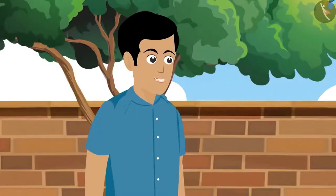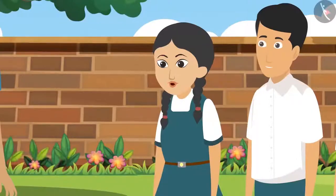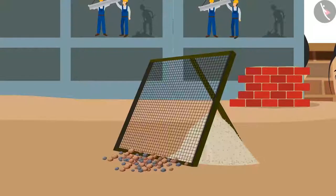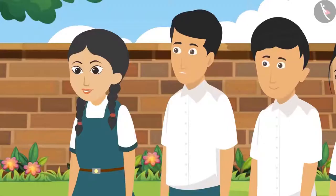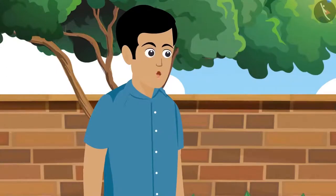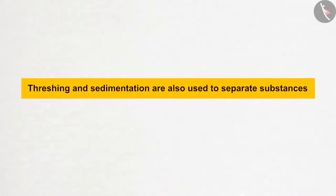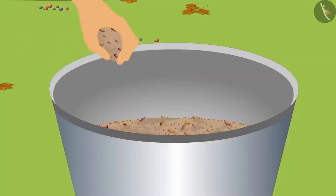Can anyone tell me where else sieving is seen? We separate impurities from flour by sieving before making chapati. I have also seen a large sieve at the construction site — it helps separate pebbles from the sand. Separation of substances is done by many such processes. Threshing and sedimentation are also used to separate substances.